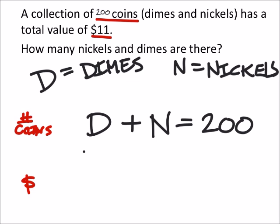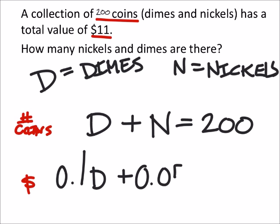For dollars, well, dimes are worth 0.1. If I multiply that by the number of dimes, that tells me how much I have worth in dimes. For nickels, they're 5 cents. Times the number of nickels would give me how much I have in nickels. And we know this totals at 11 dollars.